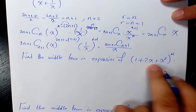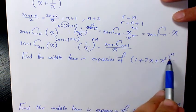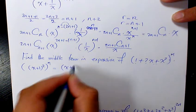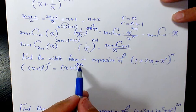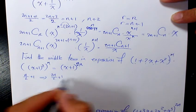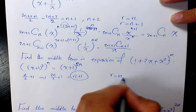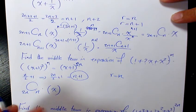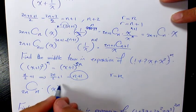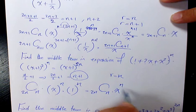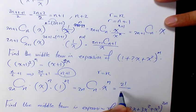Next, find the middle term in the expansion of (1 + 2x + x²)^n. Note that 1 + 2x + x² = (x+1)², so (1+2x+x²)^n = (x+1)^(2n). Since 2n is even, the middle term is the (n+1)th term, with r = n. That gives C(2n, n) · x^(2n−n) · 1^n = C(2n,n) · x^n, which equals (2n)! / (n!)² · x^n.